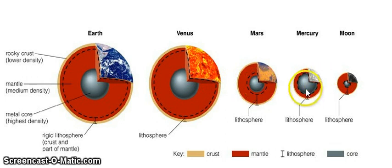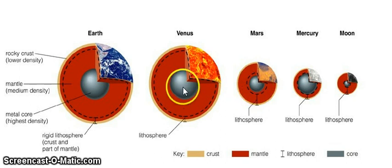There are people that collect these meteorites and they sell for a whole lot of money. But what they're actually picking up are the smashed up remains of ancient stars that are older than the Earth, Venus, Mars, Mercury, and the Moon combined.